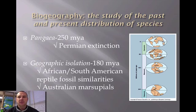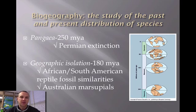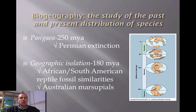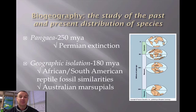Biogeography is the study of the past and present distribution of species and how they're similar. At one time there was one continent called Pangaea, and in Pangaea we had the Permian extinction. As the tectonic plates started to move apart by continental drift, you have the first evidence of geographic isolation. Similar fossil reptile records found in Africa and South America show they once were on the same continent, but when it split apart they diverged into different species.